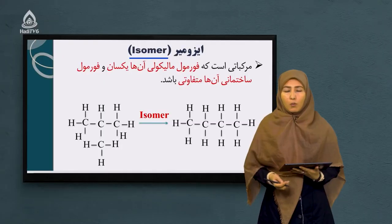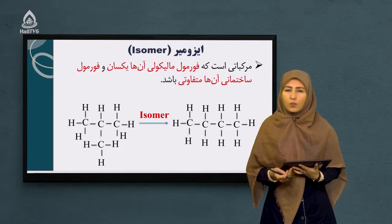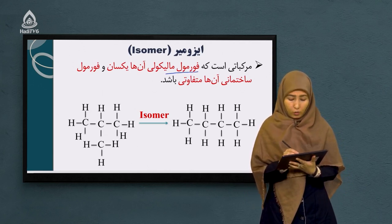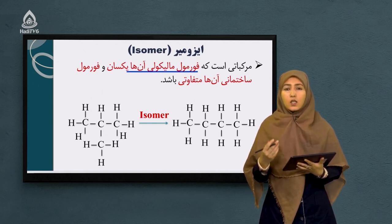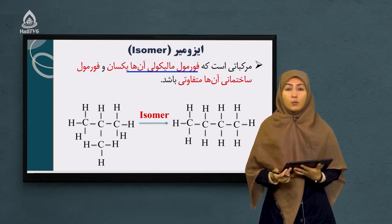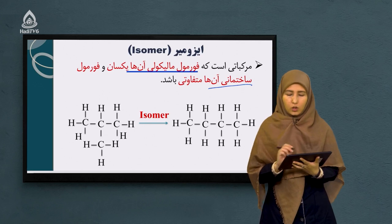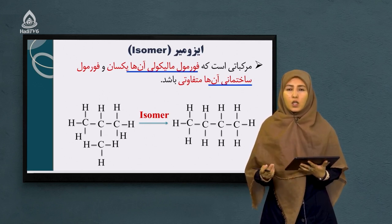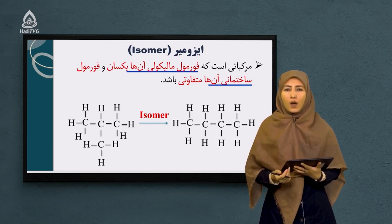ایزومیر چیست؟ شاگردهای عزیز، نازنین، ایزومیر به مرکباتی گفته می‌شود که دارای فرمول مالیکولی یکسان می‌باشد؛ یعنی تعداد و نوع اتم‌های هر دو مرکب با هم یکسان می‌باشد.